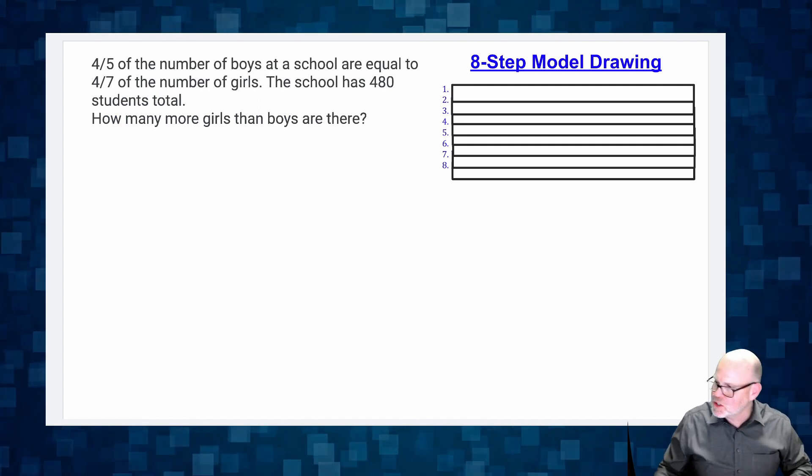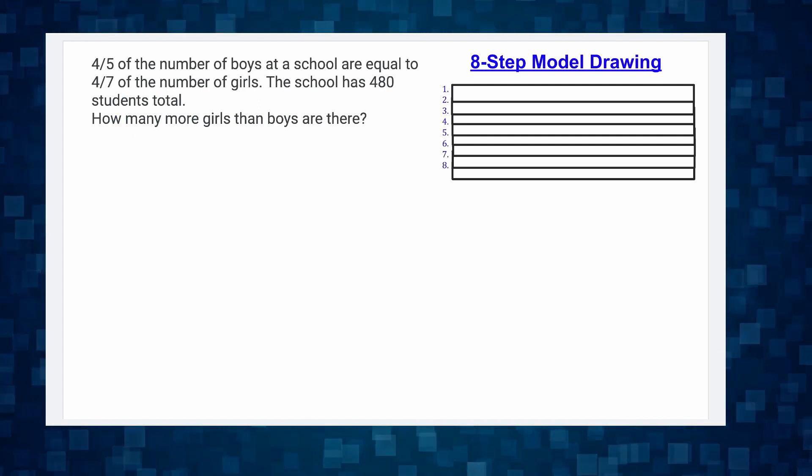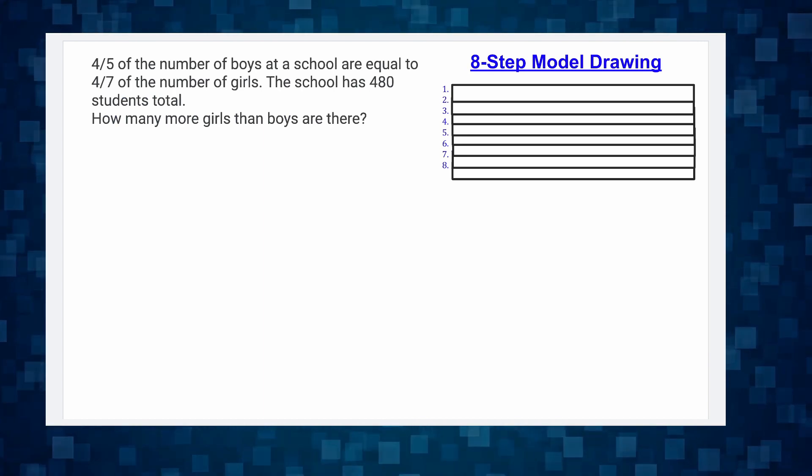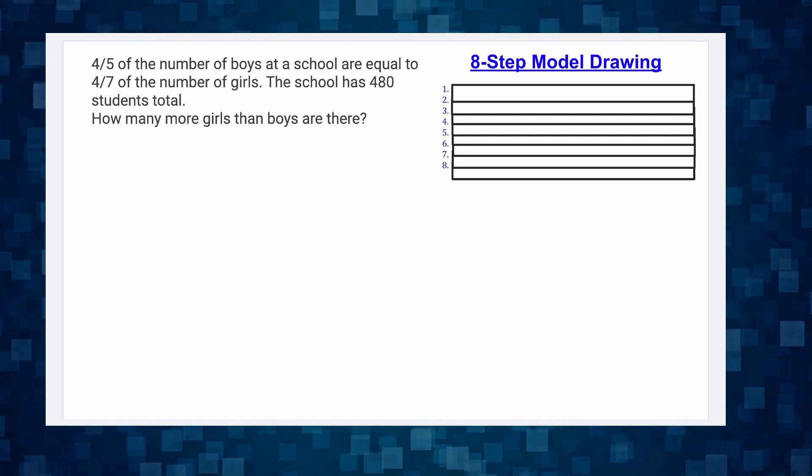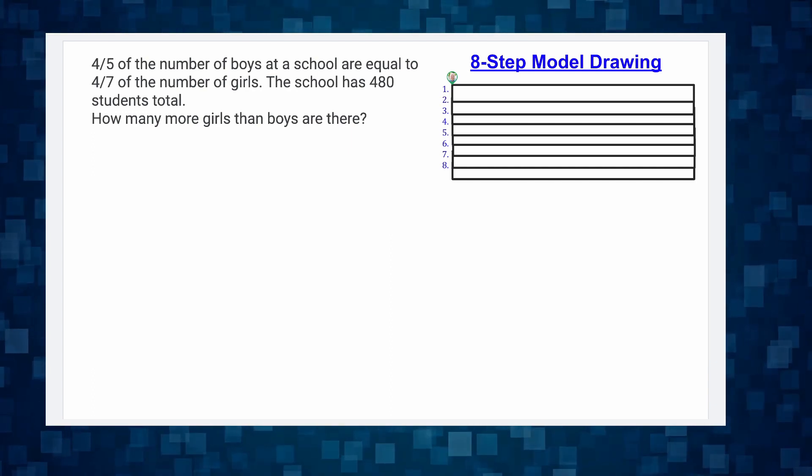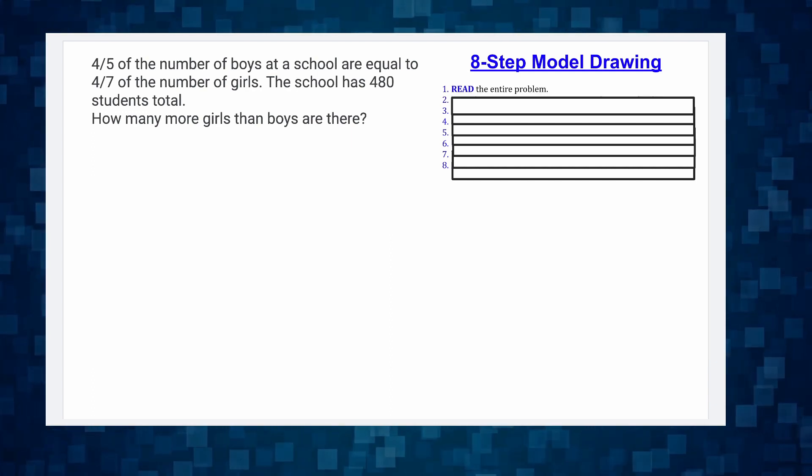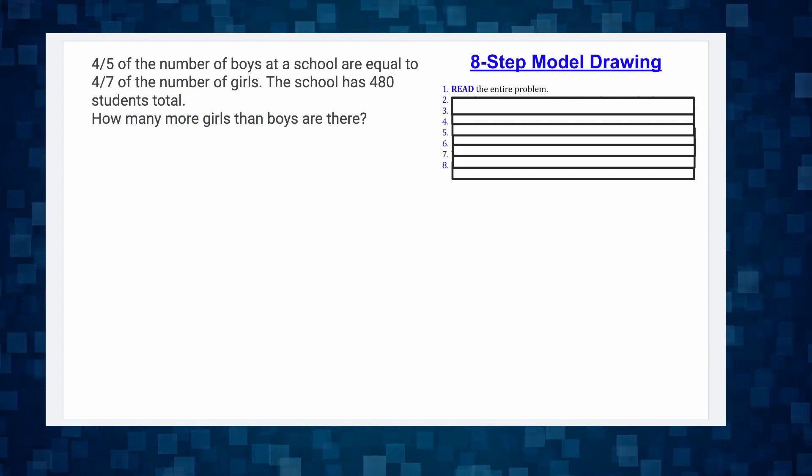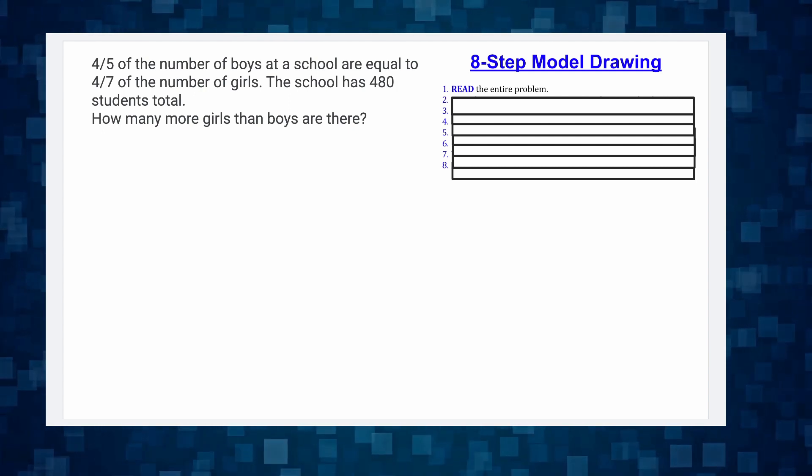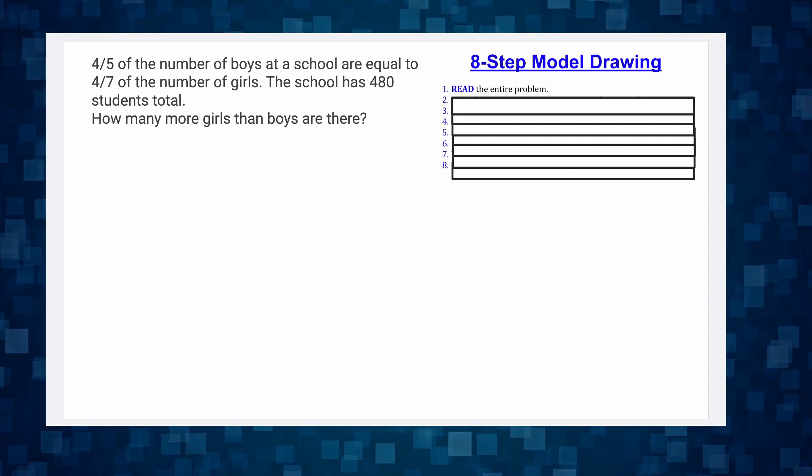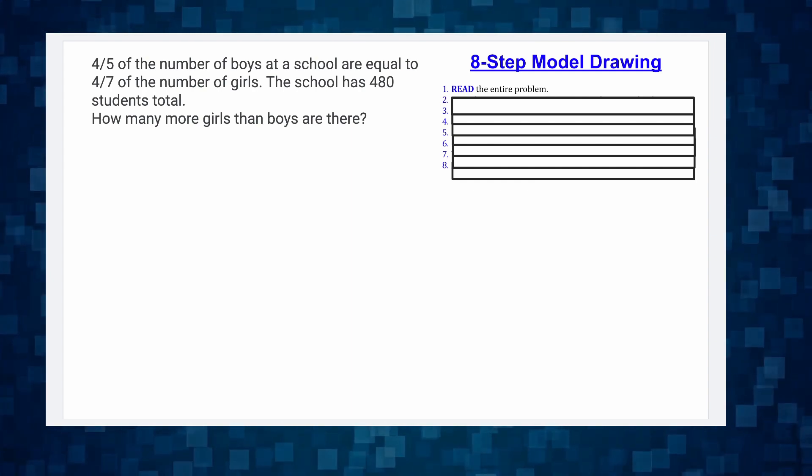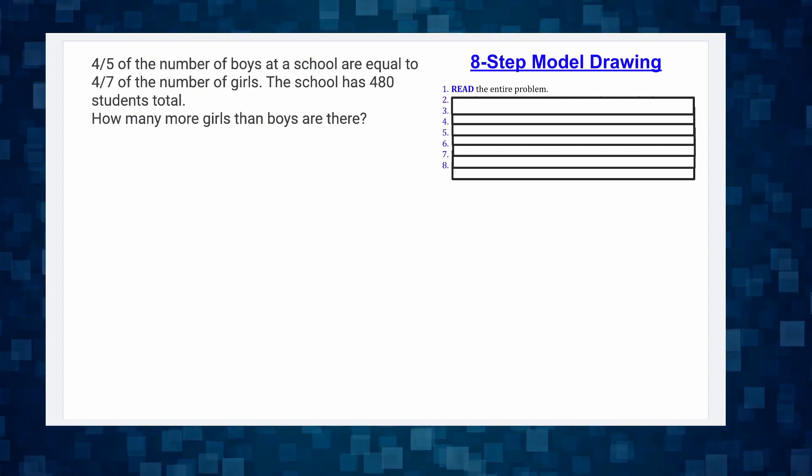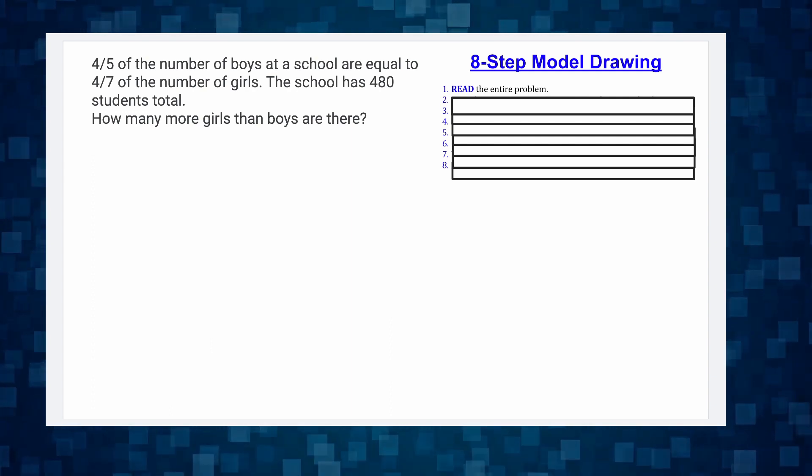So that's a quick run-through on those eight steps. Let's make meaning of those eight steps with an actual example. Step one is read the entire problem. Four-fifths of the number of boys at a school are equal to four-sevenths of the number of girls. The school has 480 students total. How many more girls than boys are there? Good, we're done with step one.